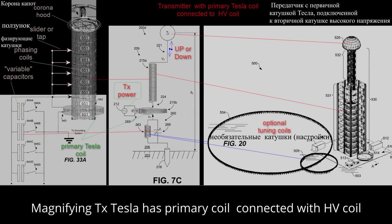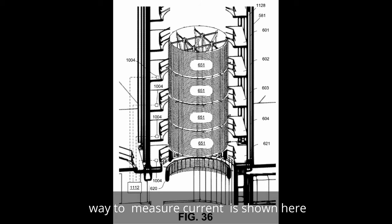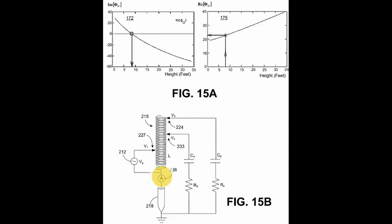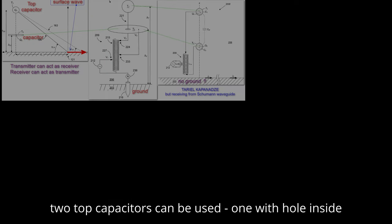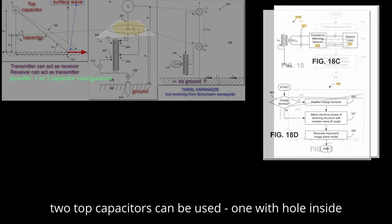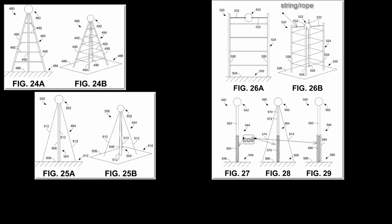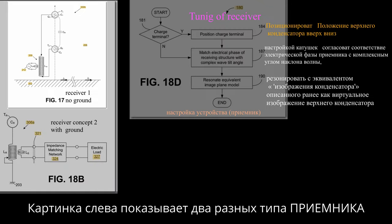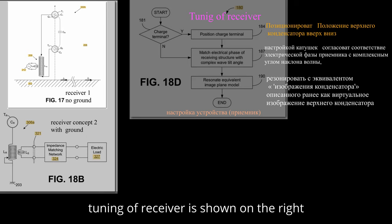The Tesla magnifying transmitter with extra coil is a transmitter with a primary Tesla coil connected to a secondary high-voltage coil. The optional coil on the ground is not required. Regardless of the coil size, we need to measure voltage and current with respect to ground. Current and voltage meters indicate the resonance parameters. Different structures can be used to make the device — including two-condenser configurations — and they are shown here. The picture on the left shows two different types of the device: with the earth and without the earth.